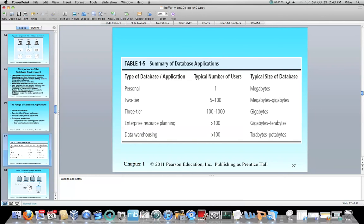We've got two-tier databases. And again, I'll break out what exactly that means in the next couple of slides. We've got three-tier. We start to get larger, more users. ERP and data warehousing are really the largest types of database applications that are out there.